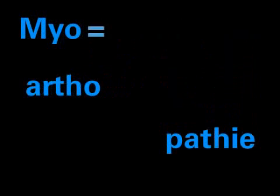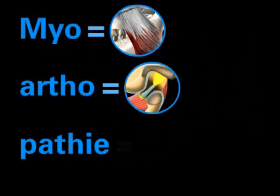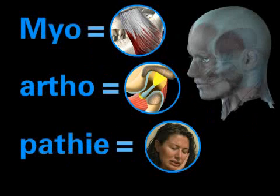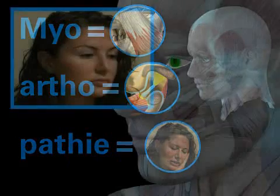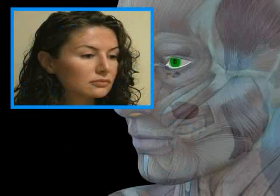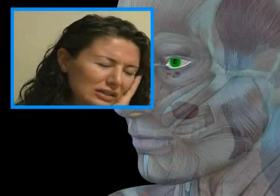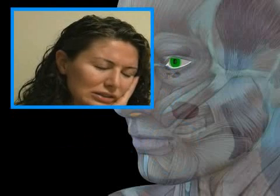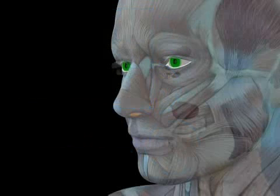Myoarthropathy is derived from three Greek words: mys or muscle, arthron meaning joint, and pathos or suffering. Therefore, the term myoarthropathy of the chewing system refers to a condition in which individuals suffer from discomfort in the chewing muscles and or the jaw joint.